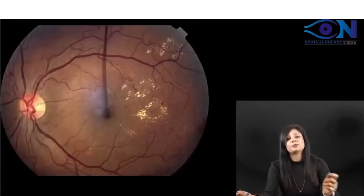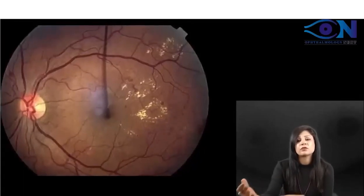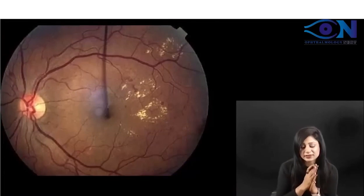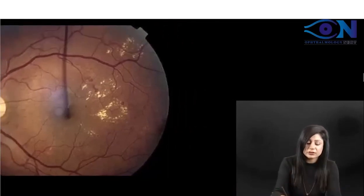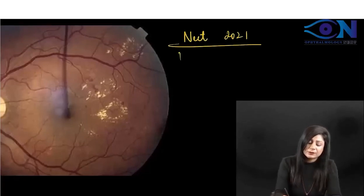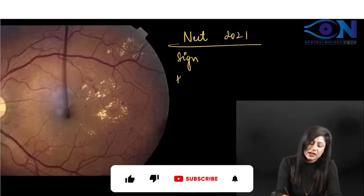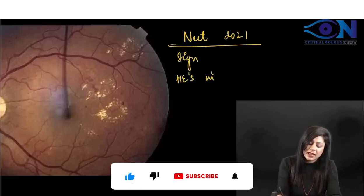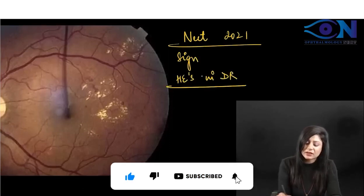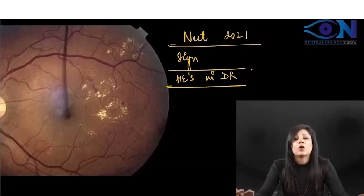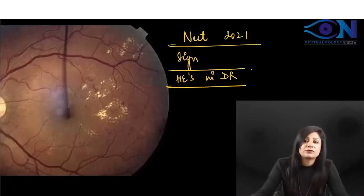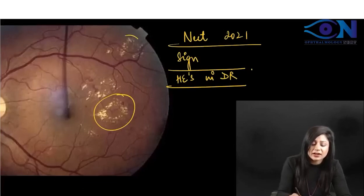There is usually a confusion between the hard exudates and the soft exudates, which is why I am trying to show them separately. There was a question in the NEET 2021 where they had given IMH and asked whether it represents hard exudates in diabetic retinopathy, hard exudates in hypertensive retinopathy, or flame-shaped changes. So you have to recognize these small hard exudates.